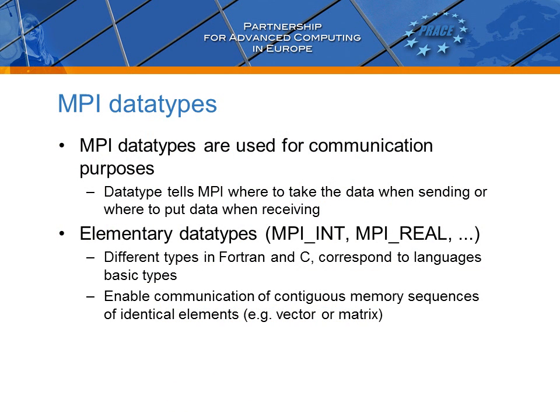You may have wondered why most of the communication routines require the data type argument. It tells the MPI library how to interpret a stream of bytes when sending or receiving. The elementary MPI data types such as MPI_Int or MPI_Real correspond to language basic types in C or Fortran. The basic inbuilt data types enable communication of contiguous memory sequences of identical elements, for example a full vector or a matrix.